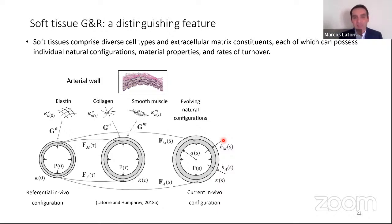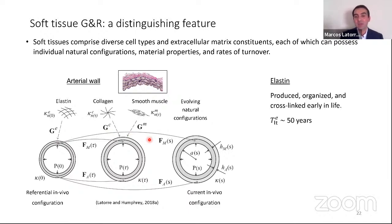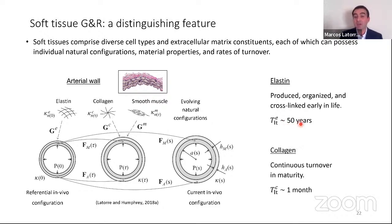Soft tissue is known to comprise diverse cell types and extracellular matrix constituents, each of which can possess individual natural configurations, material properties, and rates of turnover. For example, taking the arterial wall and considering only the load-bearing constituents — elastin, collagen, and smooth muscle — in this model they are deposited within the arterial wall for a given pre-stretch. Elastin provides elasticity to the wall but from a G&R perspective is produced, organized, and cross-linked early in life, with a mean lifetime of about 50 years. Collagen provides strength to the wall and continuously turns over in maturity with a mean lifetime of just one month.